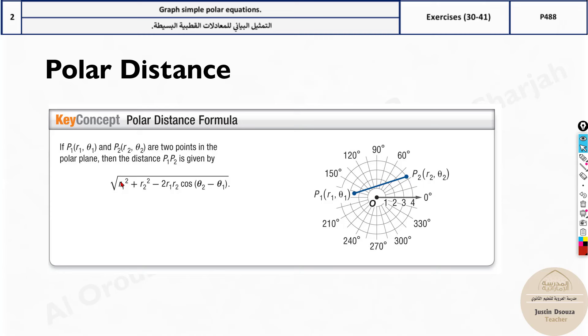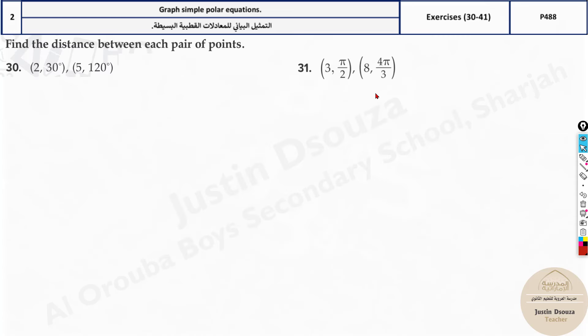The formula is very simple. Square root of radius 1 squared—there will be two coordinates, right? The first is r1, theta 1. The second point will be r2, theta 2. So r1 squared plus r2 squared minus two times r1 r2 cos theta 2 minus theta 1. This is the formula you need to memorize. Once you know that formula, you can easily substitute and solve.